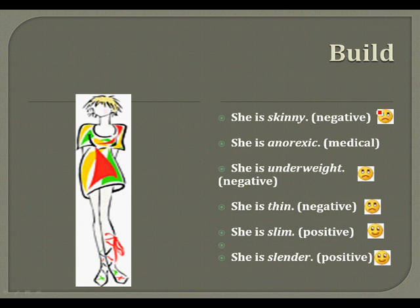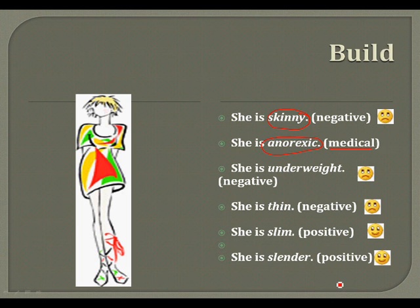Now speaking about the build of a person, we can say she is skinny — this is a negative feature. A negative term is she is anorexic, which is a medical term meaning she is very thin and ill. She is underweight and she is thin are both negative. She is slim and she is slender are positive features.